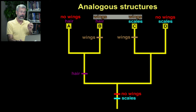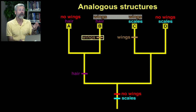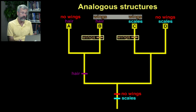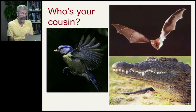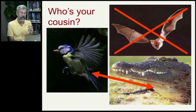Now let's turn to analogous structures. Both birds and bats have wings — what do we make of that? Wings evolved separately in bats after the origins of the mammals, and then birds developed their wings after they had separated off from the crocodilians. So these are analogous traits — similarity by convergent evolution. Birds and bats are about the same size and both have wings, but who's your cousin? It's not the bat. The cousins are the crocodiles and the birds.